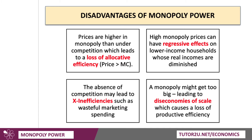A fourth point: the monopoly may get too big. A firm may have too big a share of the market. Their output may go beyond the minimum efficient scale, leading to diseconomies of scale, which then causes a loss of productive efficiency.